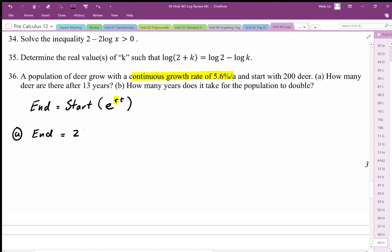The starting value is 200 deer. It's e, the growth rate is 5.6%, so we use 0.056. The time is 13 years, so times 13. We just need to punch this into our calculator.